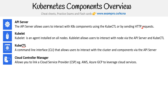You have the cloud controller manager. This allows you to link a cloud service provider like AWS, Azure, or GCP to leverage cloud services. I never had to provision one throughout this course — I never even noticed one. I think when you launch a managed service it's already there for you, and it replaces the standard controller manager. But it's just there; we don't really ever have to think about it.